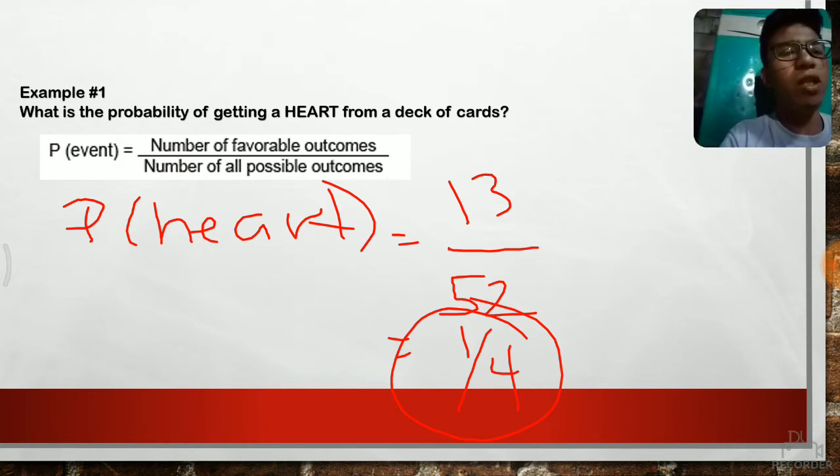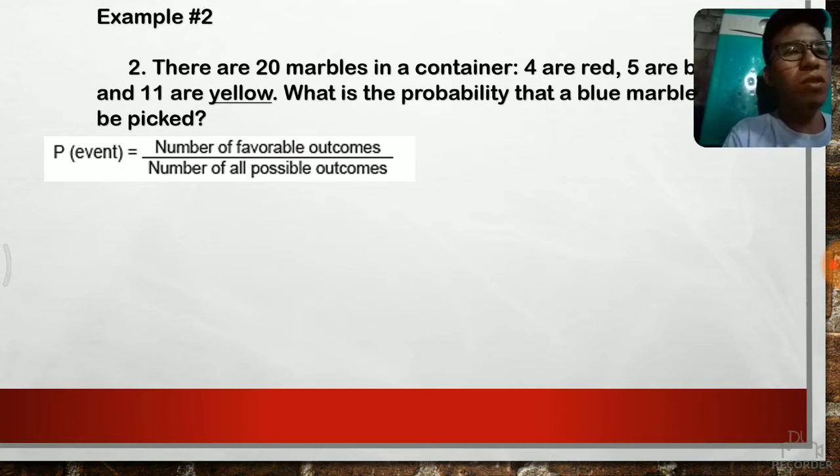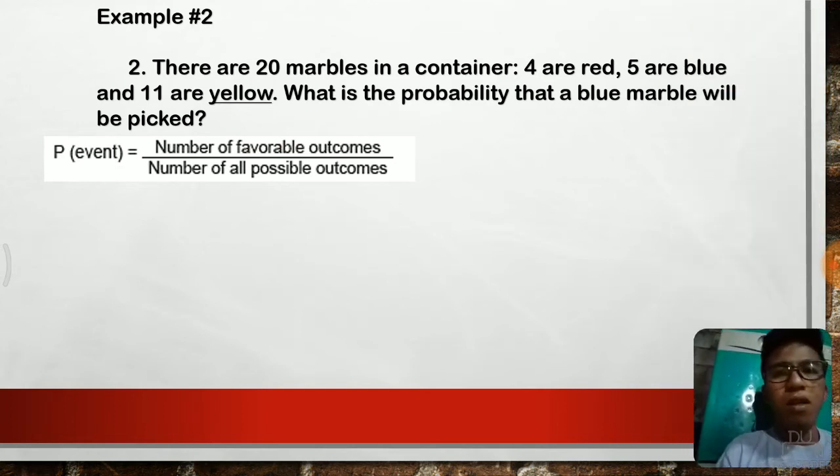Let's go with the next one. There are 20 marbles in a container: 4 are red, 5 are blue, and 11 are yellow. What is the probability that the blue marble will be picked?